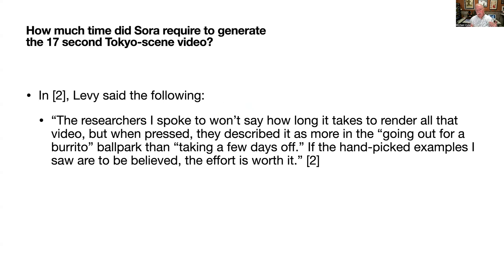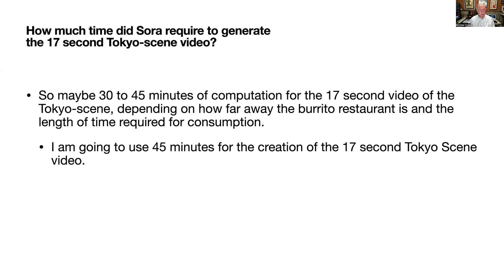So, how much time did Sora require to generate the 17-second Tokyo scene video? In this paper, the researchers won't say how long it takes to render the video, but when pressed, they described it as more in the 'going out for a burrito' ballpark than taking a few days off. So I'm thinking 30 to 45 minutes of computation for the 17-second Tokyo scene video, depending on how far away the burrito restaurant is and the time required for consumption. I'm going to use 45 minutes for the creation of the 17-second Tokyo scene video.